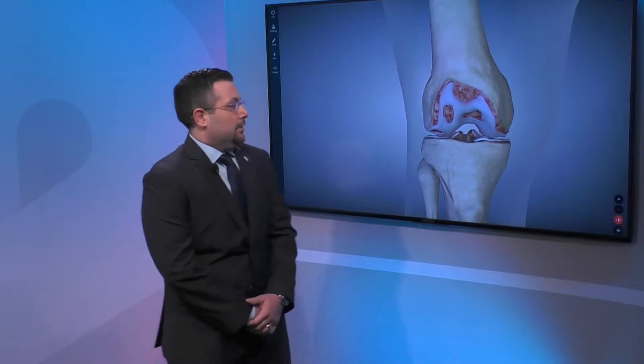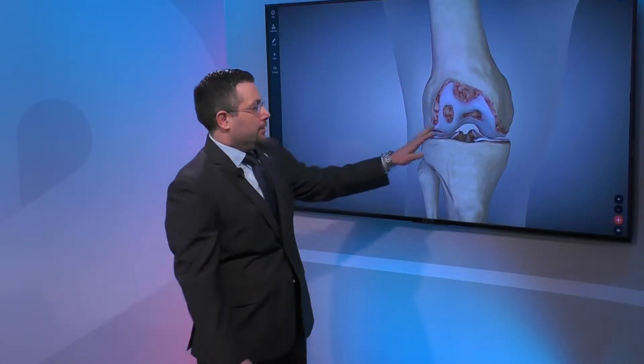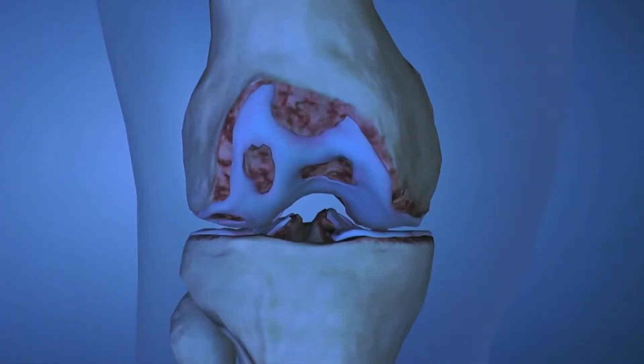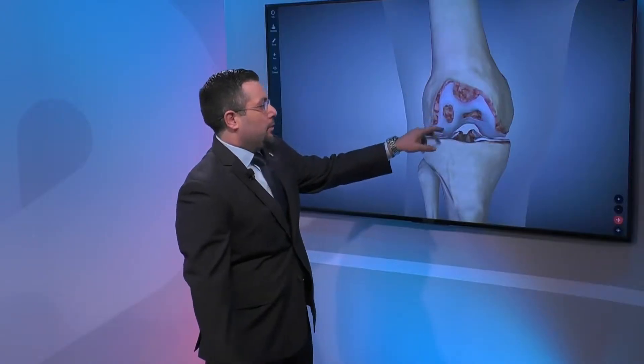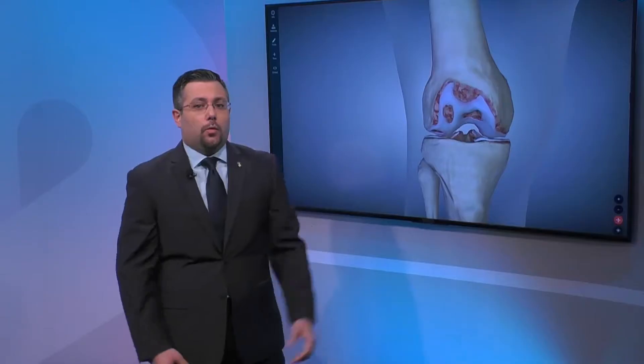Philip is with us now, standing by our bio-digital model — it's actually an excellent representation of what osteoarthritis looks like in the joint. Phil, can you explain what you see there? Sure. In this diagram, it's pretty dramatically shown, but the areas of white are the cartilage, the good cartilage in the knee. The areas here that look wasted away are where you have the chondromalacia, or the arthritic change to the knee.